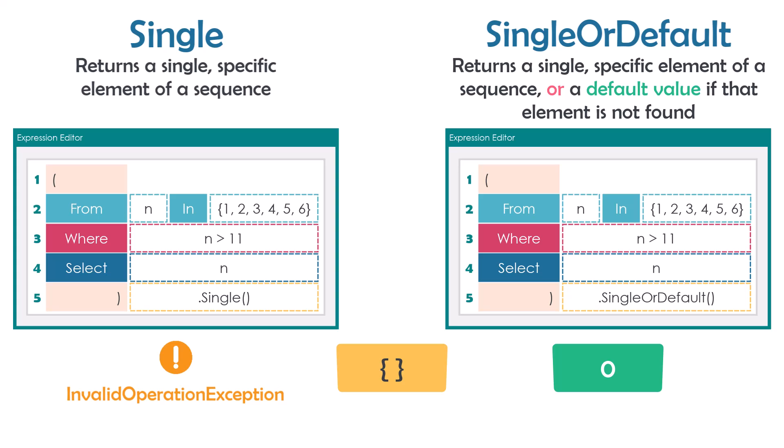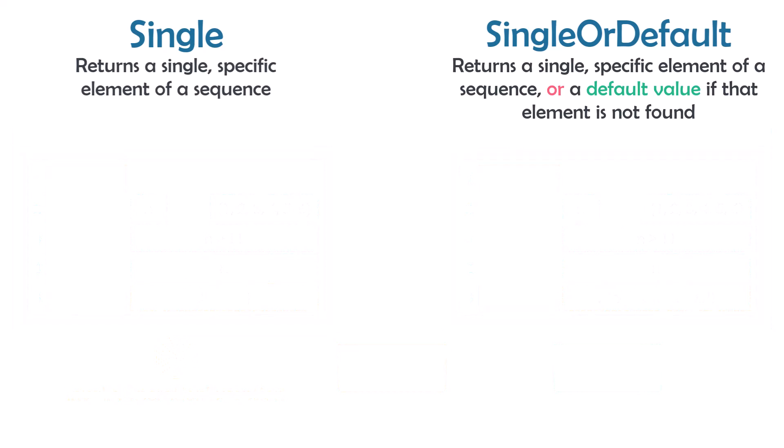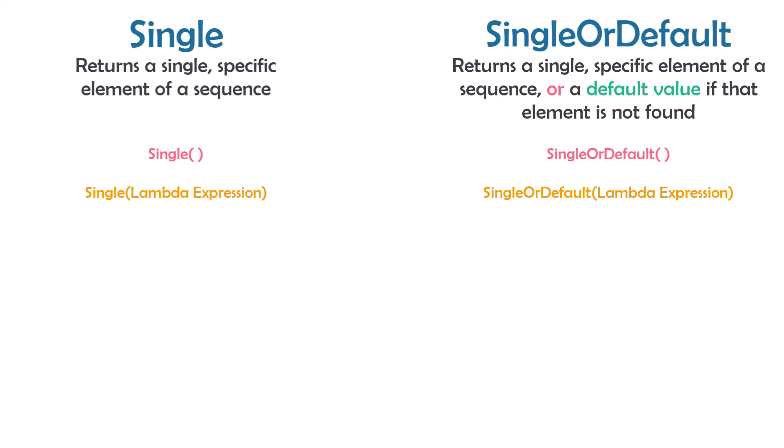This is the difference between both operators. In summary, both operators get a single element from a sequence. But if the sequence is empty, an exception is thrown for Single, while the default value is returned for SingleOrDefault. We can also use both operators in another way — the first way was with empty brackets, and the second way is using the operator with a lambda expression inside the brackets, so we can set a condition to filter elements before getting the element.